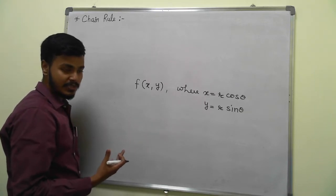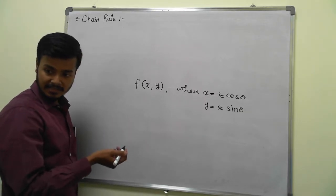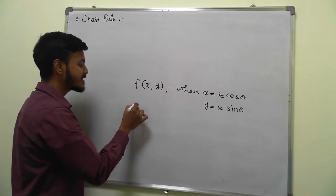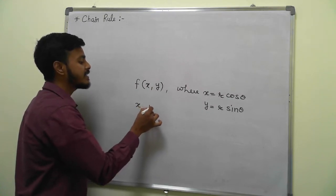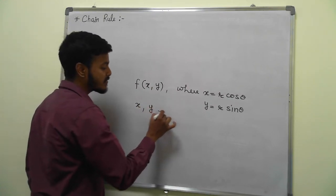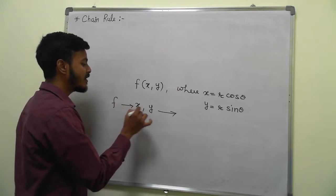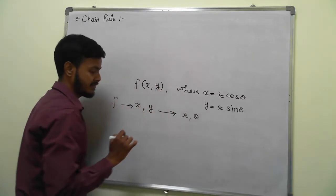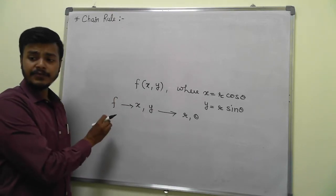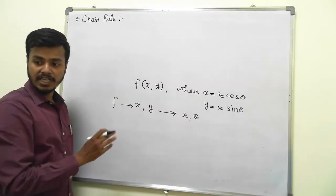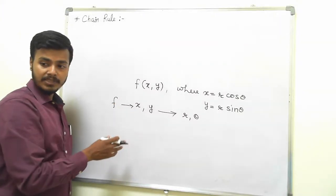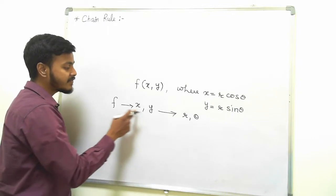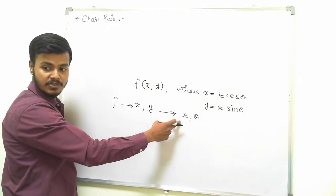The first thing you need to do is make a chain. How is the chain made? f is a function of x and y, and x and y are functions of r and theta. Once the chain is established, finding the differentiation is not a big deal.